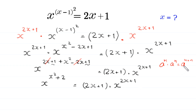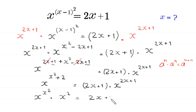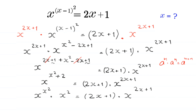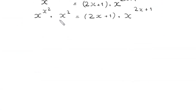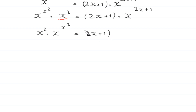By using the power rule a to the power m plus n equals a to the power m times a to the power n, this x to the power x squared plus 2 becomes x to the power x squared times x squared, equal to 2x plus 1 times x to the power 2x plus 1. Rearranging, we write x squared times x to the power x squared equals 2 times x plus 1 times x to the power 2x plus 1.